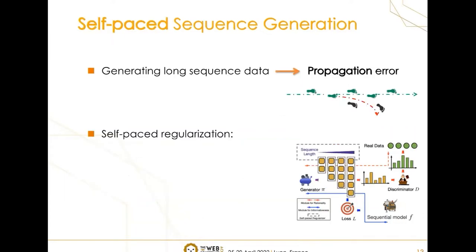In addition to the two points mentioned before, propagation error is also an important issue that cannot be ignored when generating long-sequence data. The major challenge lies in that if the formal estimation is incorrect, then the subsequent predictions can be more unreliable. To tackle this problem, we borrow the idea of self-paced learning to learn the generator in an easy-to-hard manner.